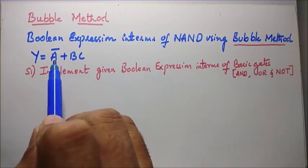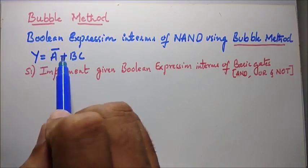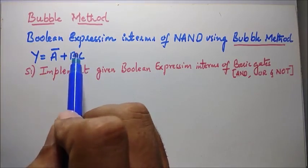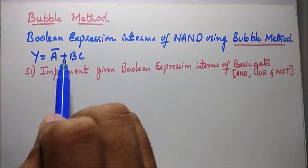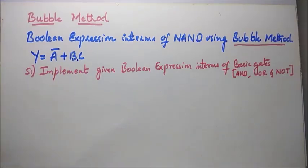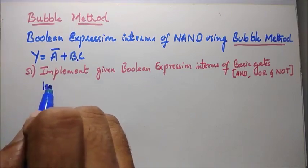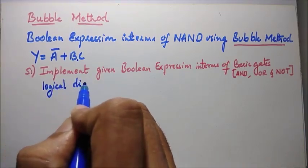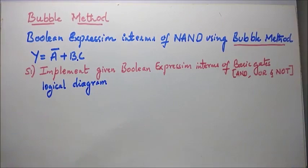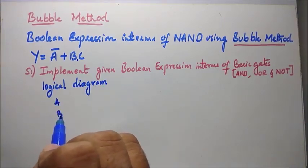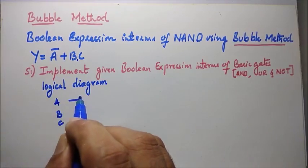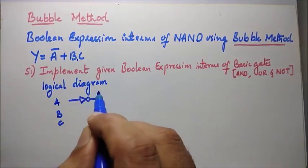As you can see in our logical expression, we have A complement OR'd with B AND'd with C. To realize this, we require a single NOT gate to generate A̅, a single OR gate for the plus operation, and a single AND gate for the dot operation. Considering A, B, C as our three inputs, to generate A̅ I need a NOT gate, which results in A̅.